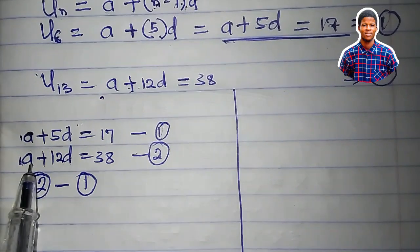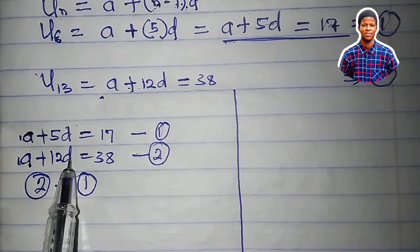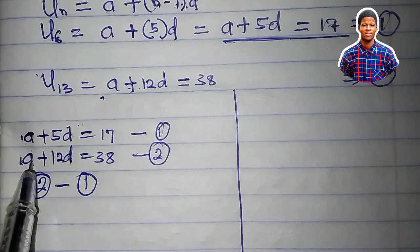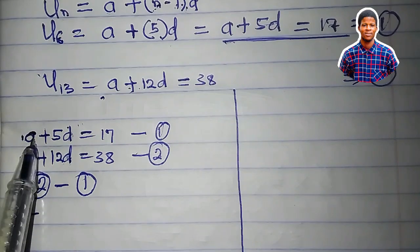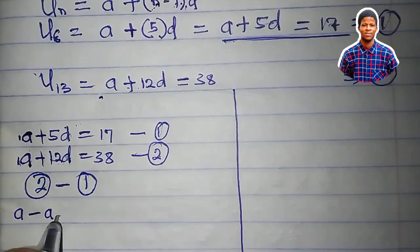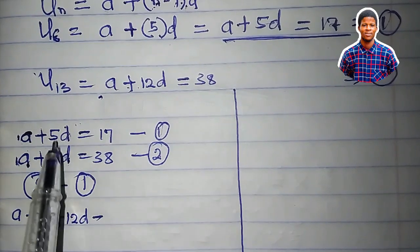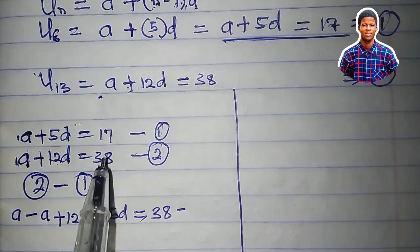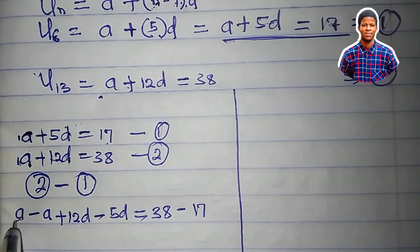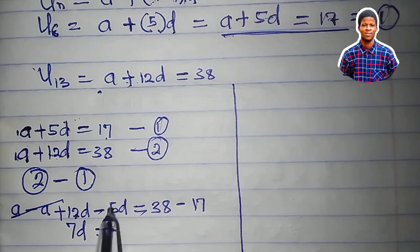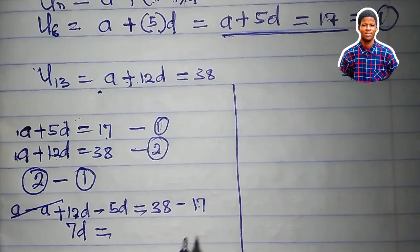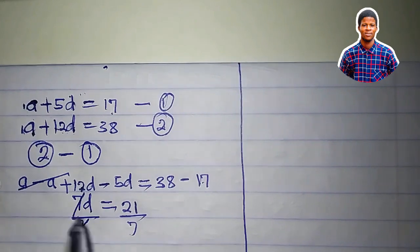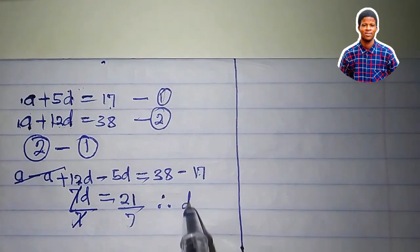So that when I say A minus A, it will be 0. Then my equation will now be in terms of d. This is what I'm saying. Equation 2 minus equation 1, we have A minus A, then plus 12d minus 5d is equal to 38 minus 17. A minus A is out. 12d minus 5d is 7d. 38 minus 17 is 21. Dividing both sides by 7, we have d is equal to 3.